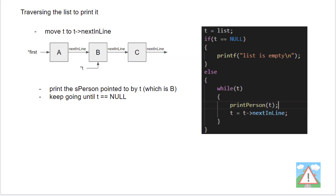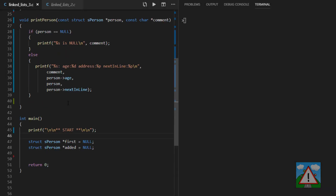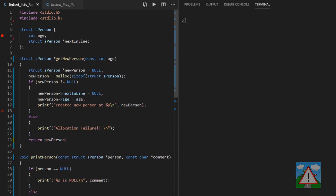In code, traversal is quite simple. We assign t equal to the list pointer. If t is null, there's nothing on the list. Otherwise, while t is non-null, we print t, then assign t to t's next-inline to traverse through the list. We'll use this twice in the program — once to print the list, and once to free all the memory that's been allocated.